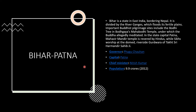The next one is Bihar and its capital city is Patna. Bihar is a state in East India bordering Nepal. It is divided by the river Ganges, which floods its fertile plains. Important Buddhist pilgrimage sites include the Bodhi tree in Bodhgaya's Mahabodhi temple, under which the Buddha allegedly meditated. The governor of the state is Pagu Chauhan, the capital is Patna, the chief minister is Nitish Kumar, and the population is 9.9 crores in 2012.